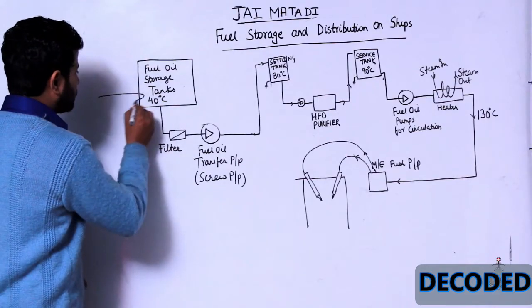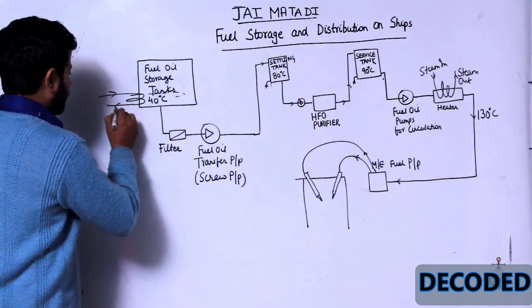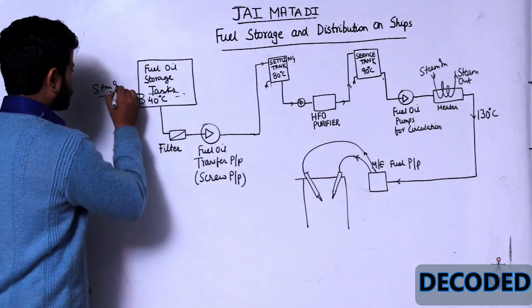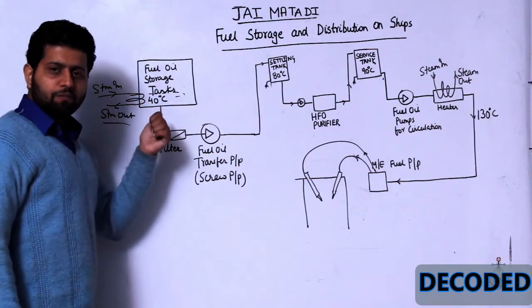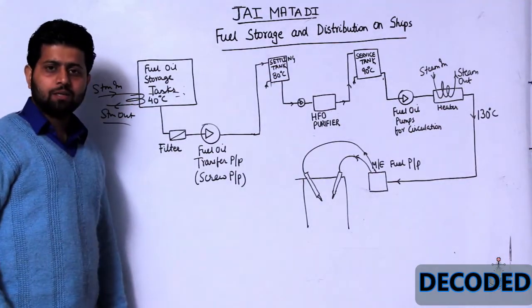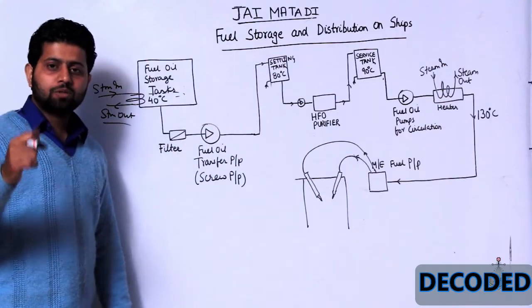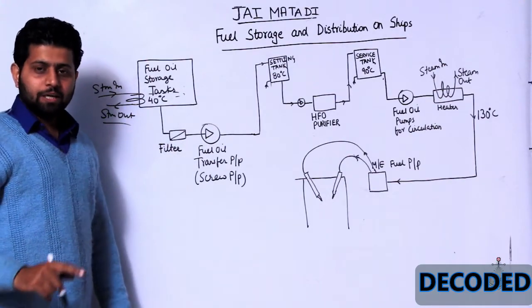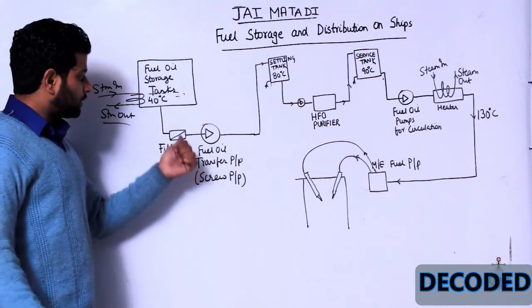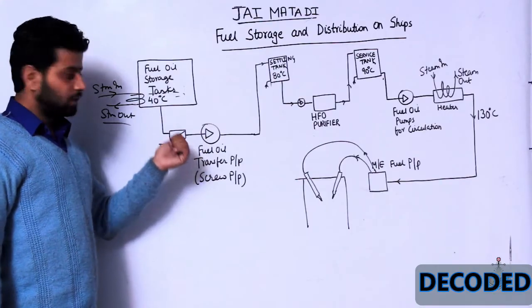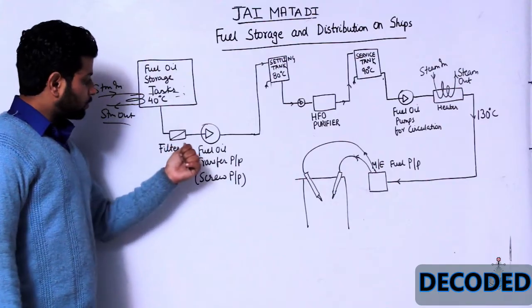In the storage tanks I have steam coils which go throughout the tank — steam in and steam out — and we maintain a temperature of around 40 degrees centigrade. We must ensure the temperature is always above the cloud point and pour point. If it is less than the pour point, the oil will not flow, and if it is less than the cloud point, the filter will get choked.